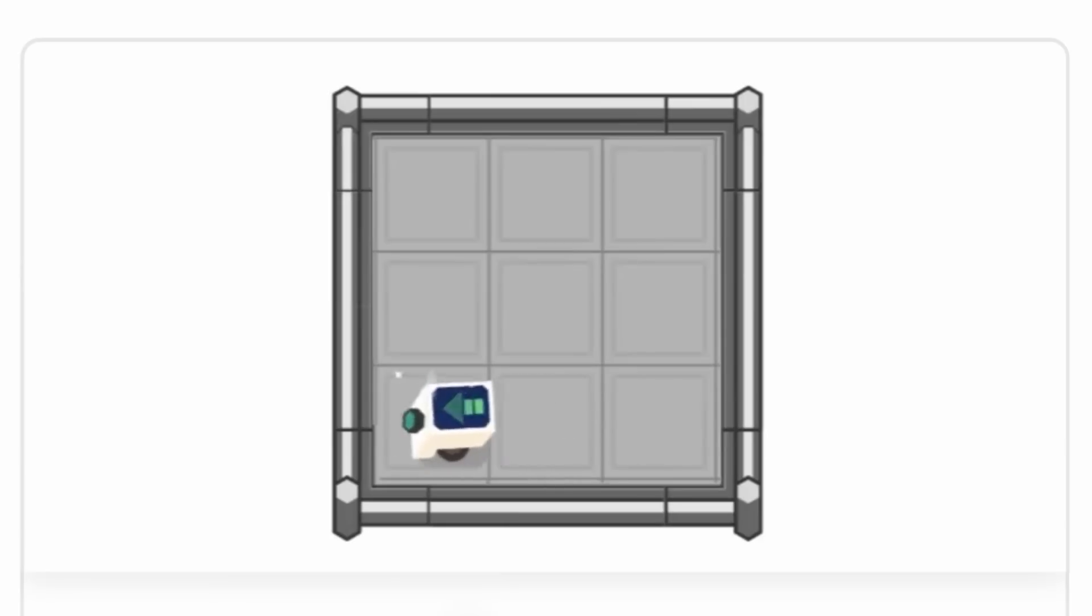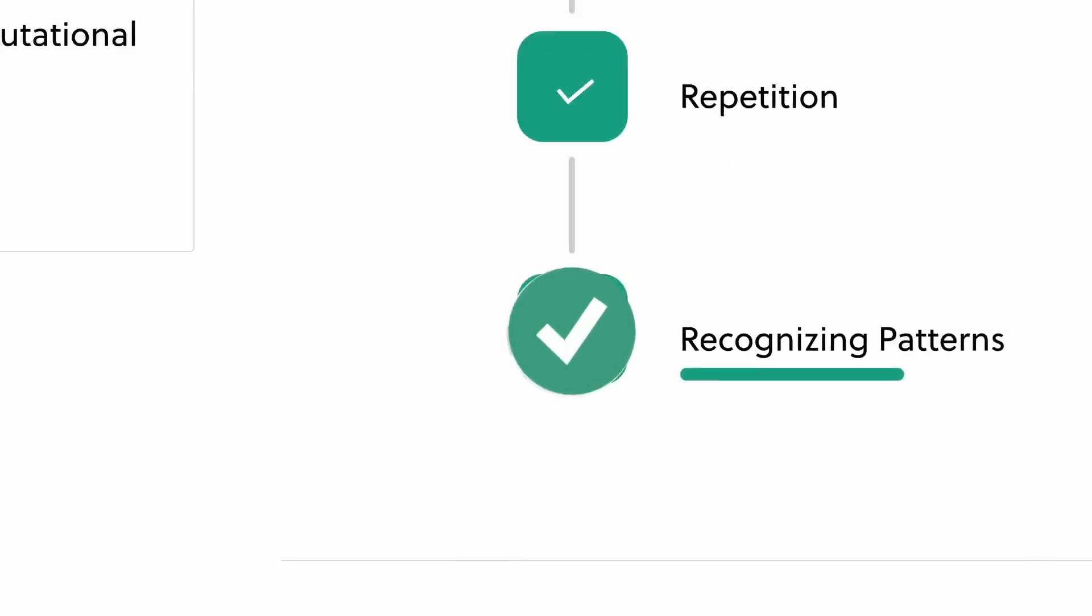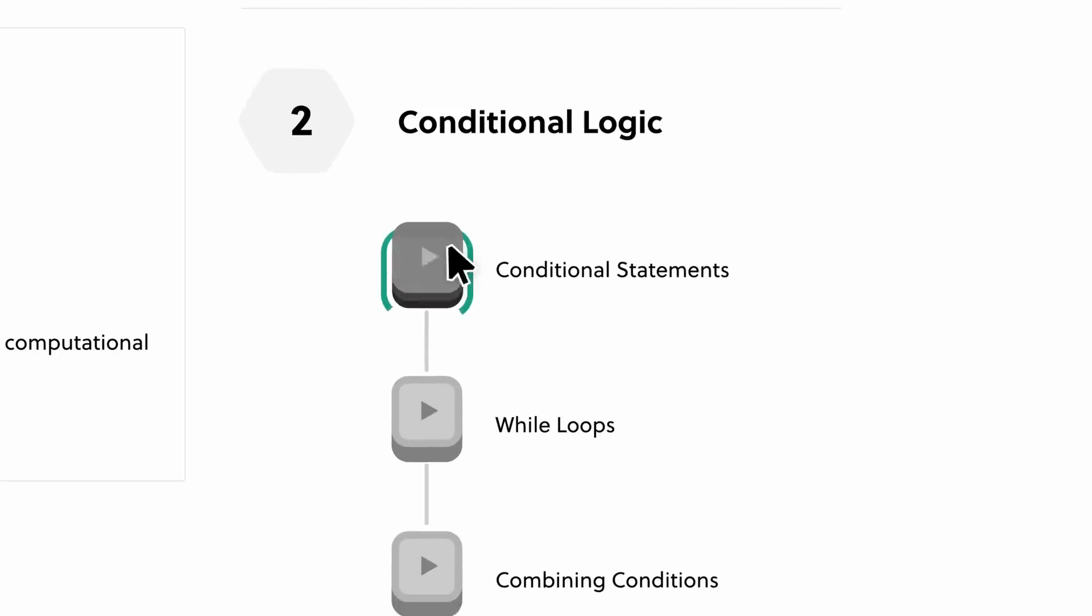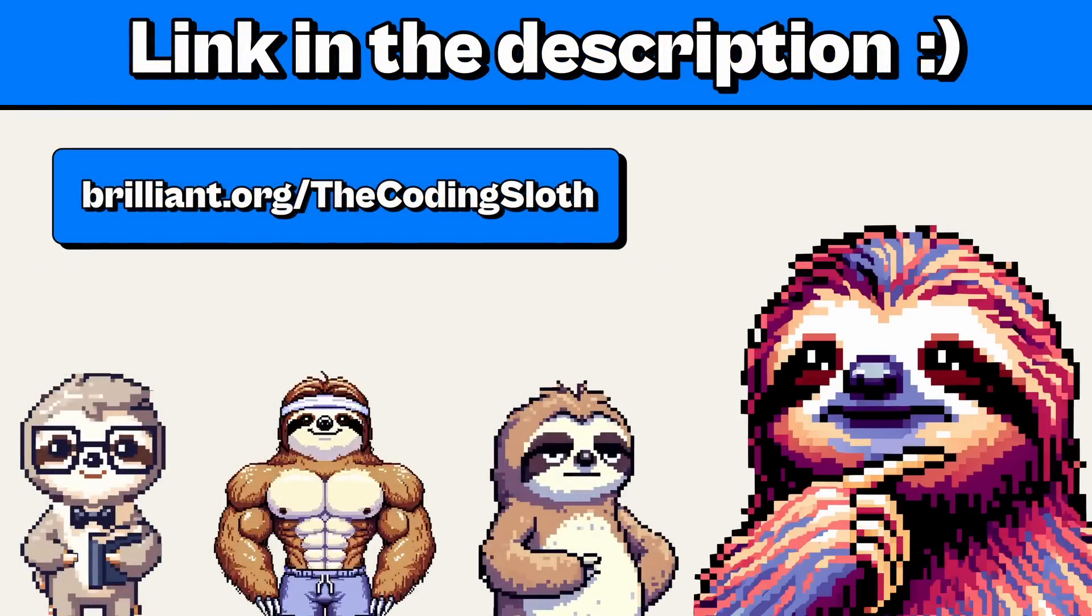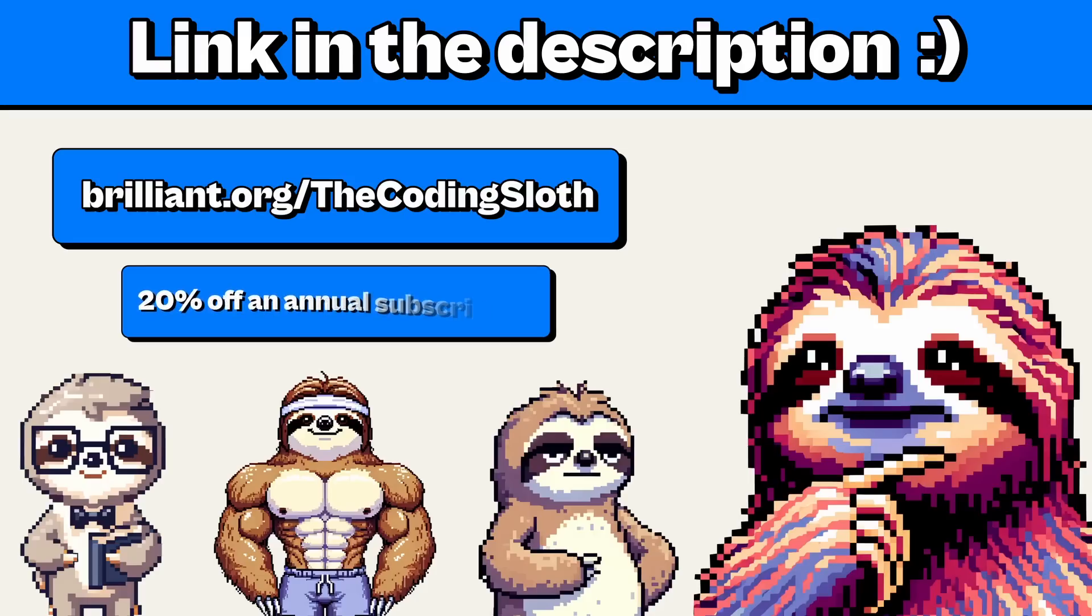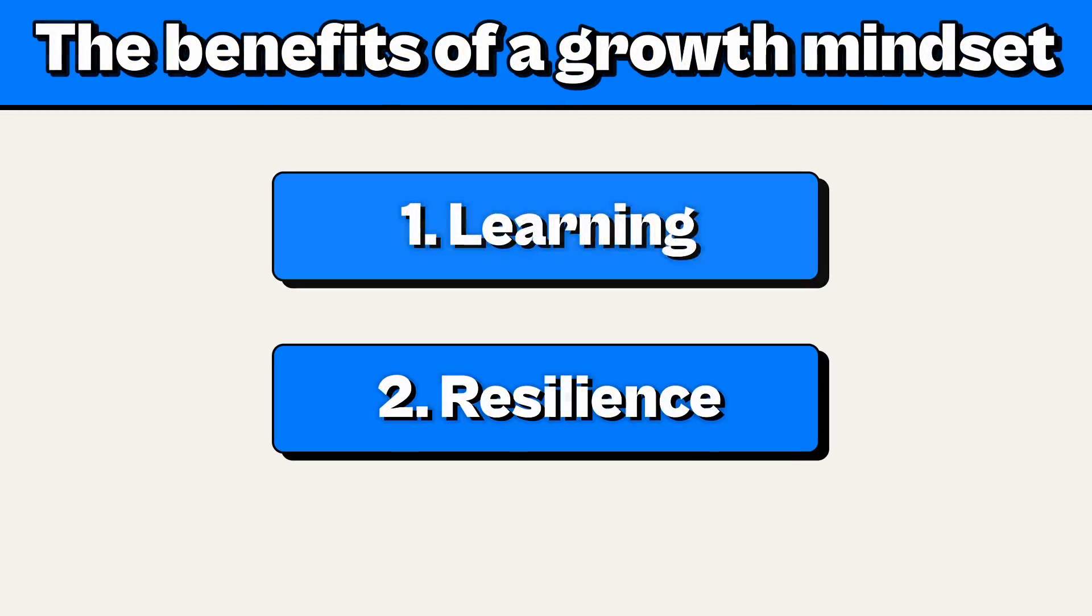Which is great because problem solving is the skill that took me the longest to develop. So if Brilliant sounds like the learning platform for you and you'd like to try everything Brilliant has to offer for free for a full 30 days, visit brilliant.org/thecodingsloth or click the link in the description. You'll also get 20% off an annual premium subscription. You're welcome.